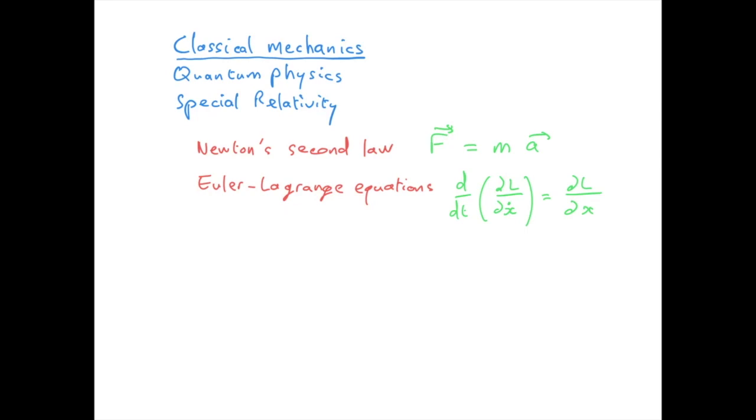This equation may look complicated at first sight because it involves different sorts of derivatives, as you can see. And also we need to define what is the object L. But you will soon see that using these Euler-Lagrange equations are often much simpler than using Newton's law.